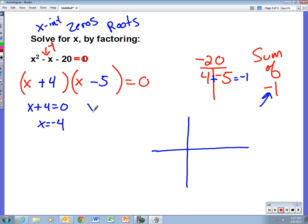What will make x minus 5 equal zero? x equals 5. Again, those are the solutions, those are the x-intercepts, those are the zeros, those are the roots. They are all the same thing.